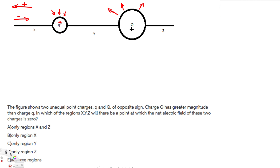Now let's look at region Y. For the negative charge, all directions are going like this, and for the positive charge the field is also going in the same direction because it's emitting outward. So there's no way the net electric field can be zero in the Y location — that equation is not possible.